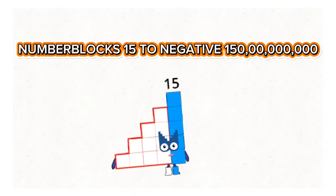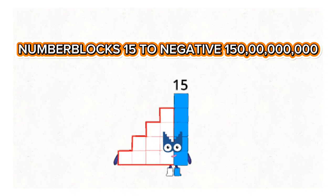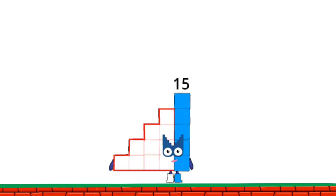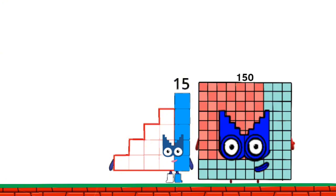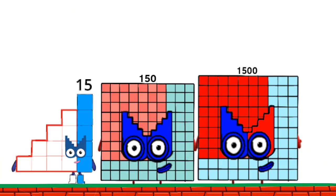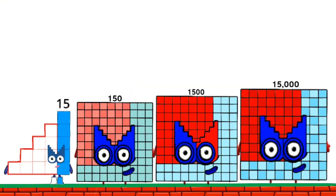Number blocks: 15 to negative 15 billion. 15. 150. 1,500. 15,000.